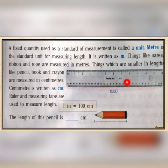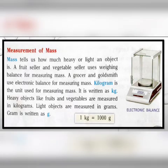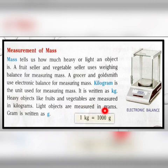In our daily life we use a ruler or scale to measure length. Next is measurement of mass — that means how heavy an object is. To measure that we use a measuring balance; nowadays electronic balances are also used. The unit for measuring mass is kilogram, and one thousand grams make one kilogram. Gram is the smaller unit, written as 'g'.